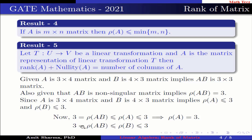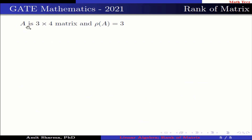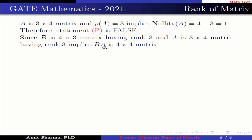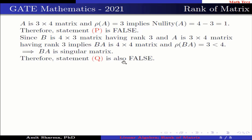In the same way, rank of AB is 3 and rank of AB ≤ rank of B, with rank of B ≤ 3, so rank of B equals 3. Now A is a 3×4 matrix with rank 3, so nullity of A equals 4 minus 3, which is 1. Therefore statement P is false. Since B is a 4×3 matrix with rank 3 and A is a 3×4 matrix with rank 3, BA is a 4×4 matrix with rank 3, which is less than 4. This implies BA is singular, so statement Q is also false. Hence option 3 is correct.